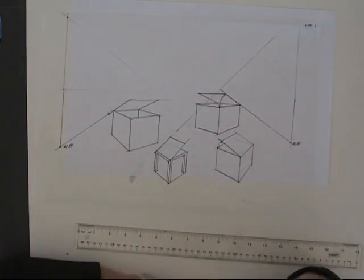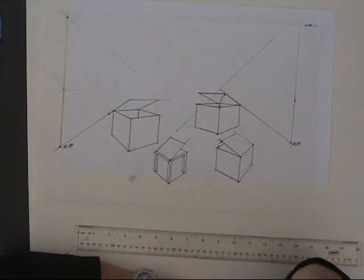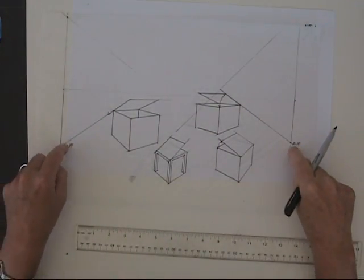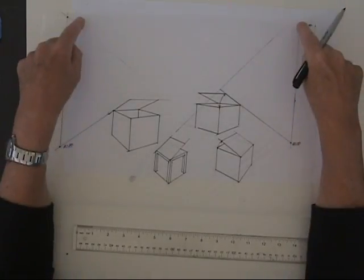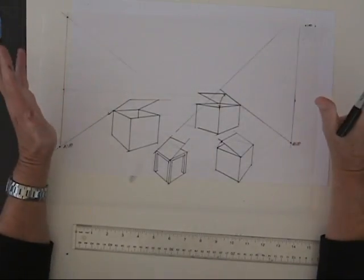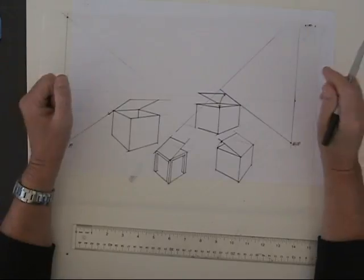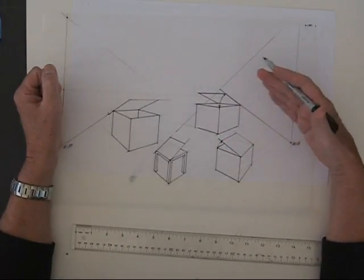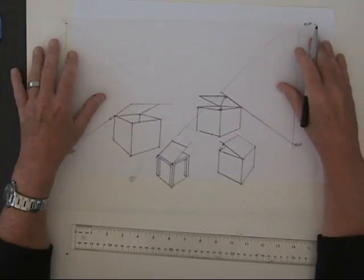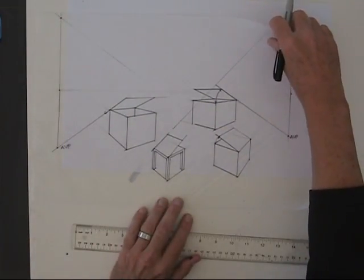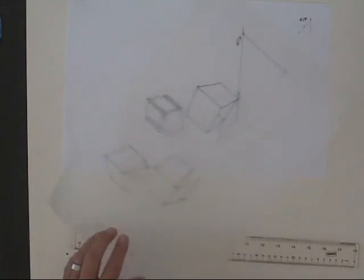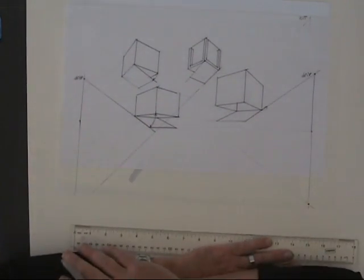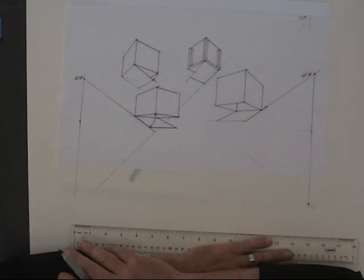So it takes a little bit of thought to figure out whether the auxiliary vanishing point is below the horizon line or above. And it's worthwhile taking the time to figure that out because it's going to add a lot more believability to your drawing and make it look a lot more professional. If these boxes were above the horizon line, I could simply use this same guide, just invert the paper.